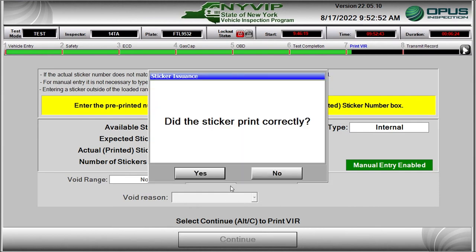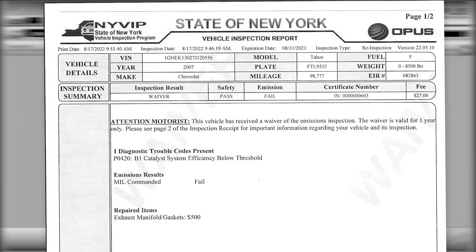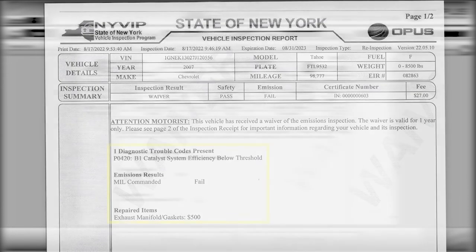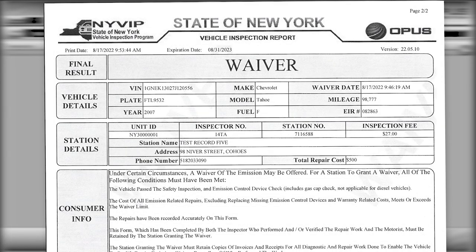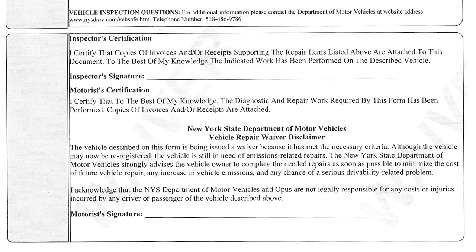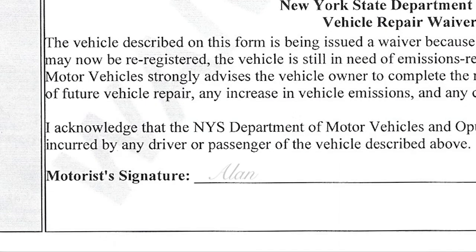The software will print a sticker for the waiver, then print a Waiver VIR. The first page of the VIR is for the customer, showing that the vehicle failed the emissions section of the inspection and that a one-year only waiver has been issued. Additional information on the reasons for failing the emissions test are detailed along with the repaired item and cost. The second page has more information about the waiver, including a section of consumer information. In the bottom box, you as the inspector must certify that the waiver has been properly issued and all receipts have been attached, by signing in the space provided. The customer acknowledges the issuance of the waiver by signing in the space provided. Retain this form and receipts for two years.